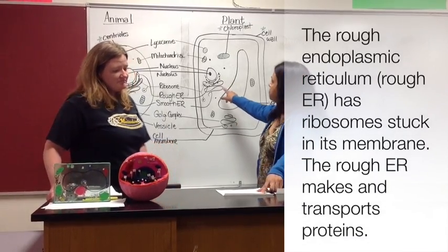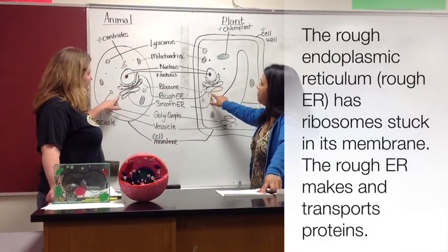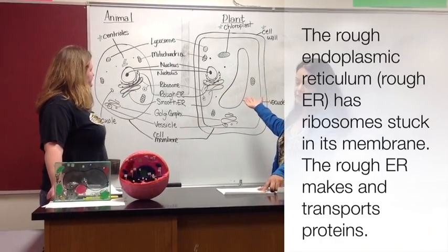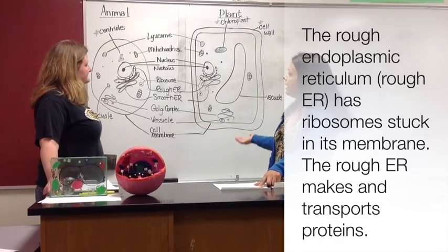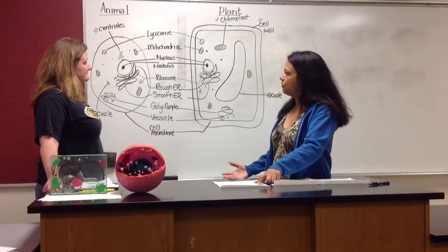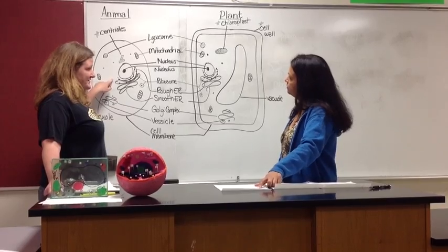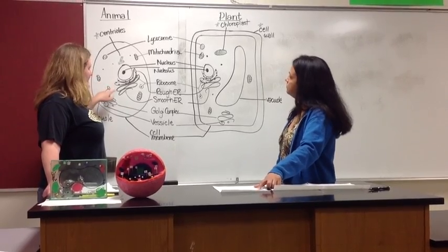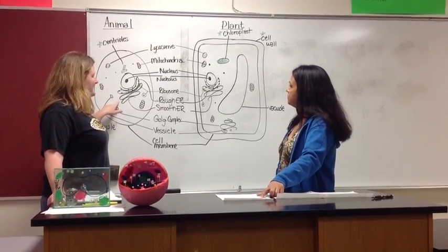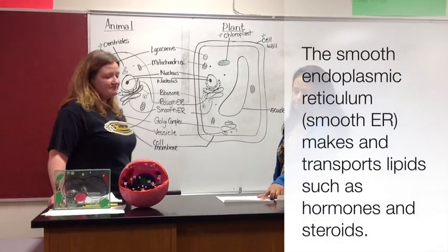The smooth ER is found right next to the rough ER. It's called smooth because it does not have ribosomes attached to it. The smooth ER is responsible for creating and transporting steroids and things of that nature. Both the rough and smooth ER are kind of like the highways of the cell.